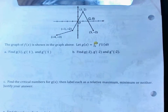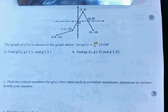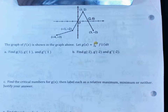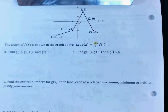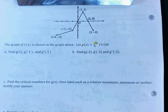The first thing to notice when you start this FRQ is that instead of the upper limit being 0 to x, it's 0 to 2x. That means when you take the derivative, you'll need to use the chain rule — specifically, the chain rule version of the Fundamental Theorem of Calculus. In part A, we're going to find g(1), g'(1), and g''(1).